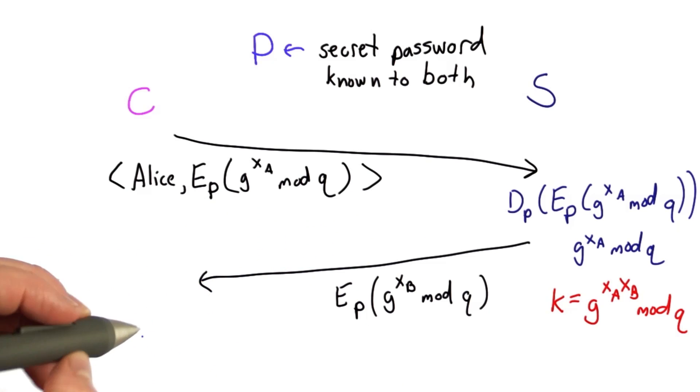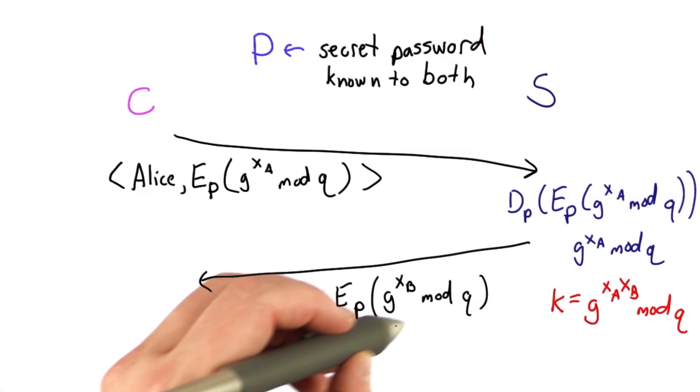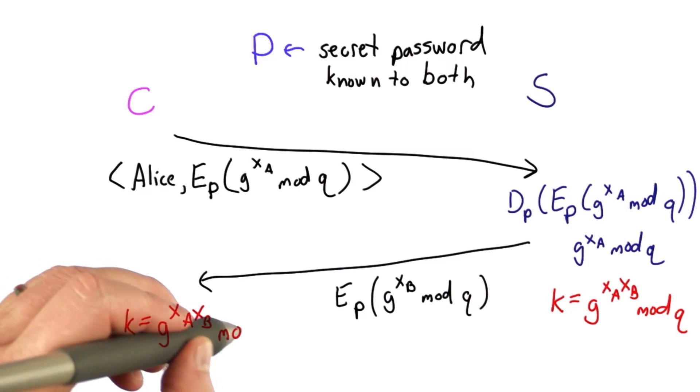Alice decrypts that message so she can also obtain the value here and obtain the key using the normal Diffie-Hellman technique.